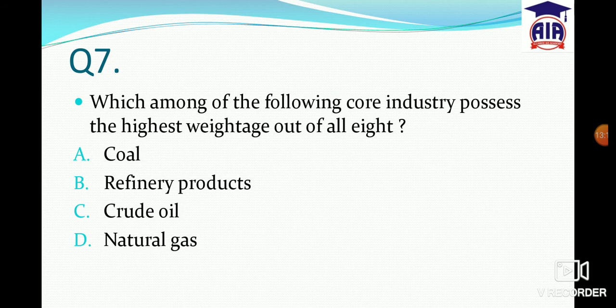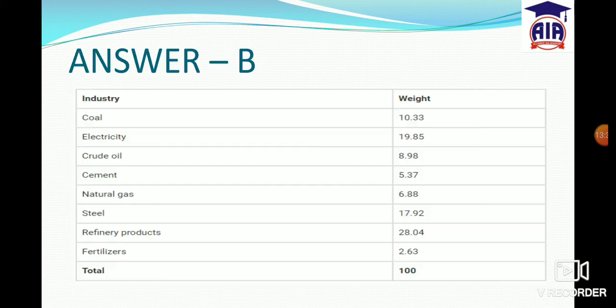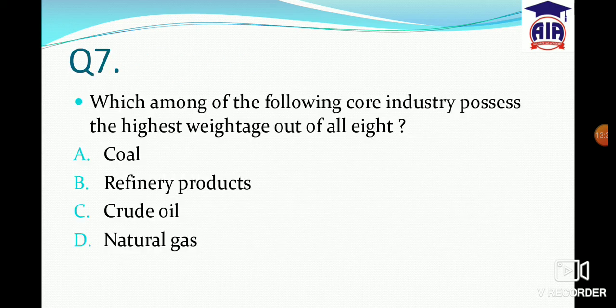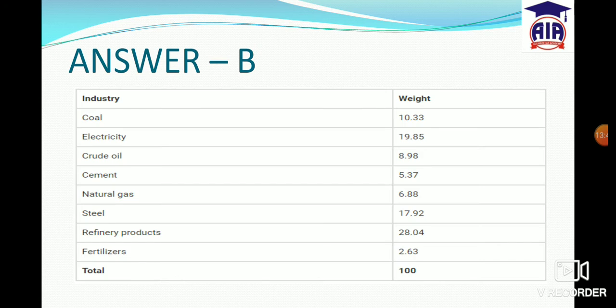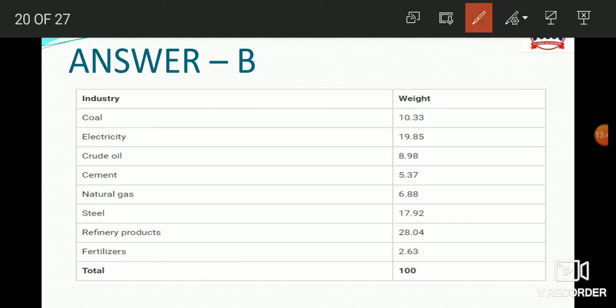Next question: Which among the following core industries possesses the highest weightage out of all eight core industries? Options: coal, refinery products, crude oil, or natural gas. The answer is B — refinery products, which has a weightage of 28.04.